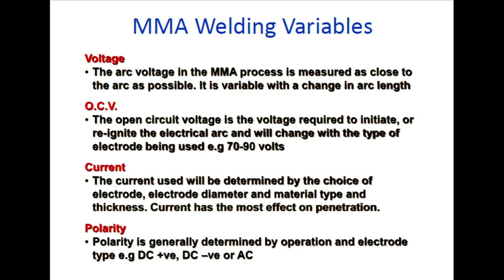Polarity is generally determined by the electrode type: DC positive (DCEP) or DC negative (DCEN). You can understand from the WPS which polarity to use. In the root pass, you need to check whether DCEP or DCEN is specified, and the polarity may change for subsequent passes.